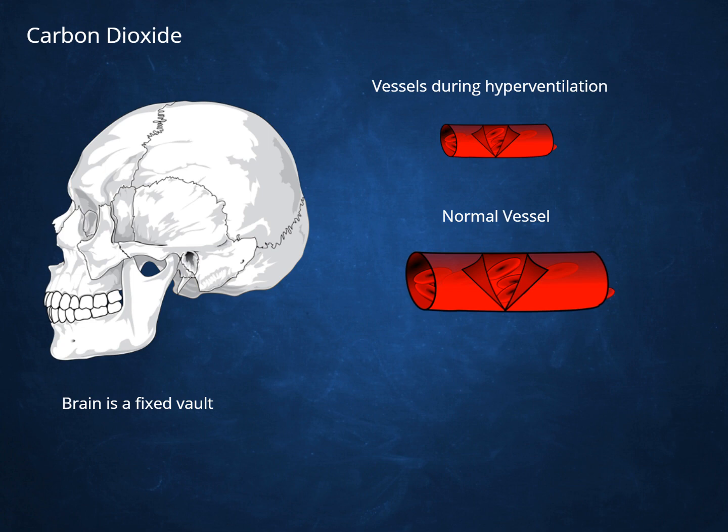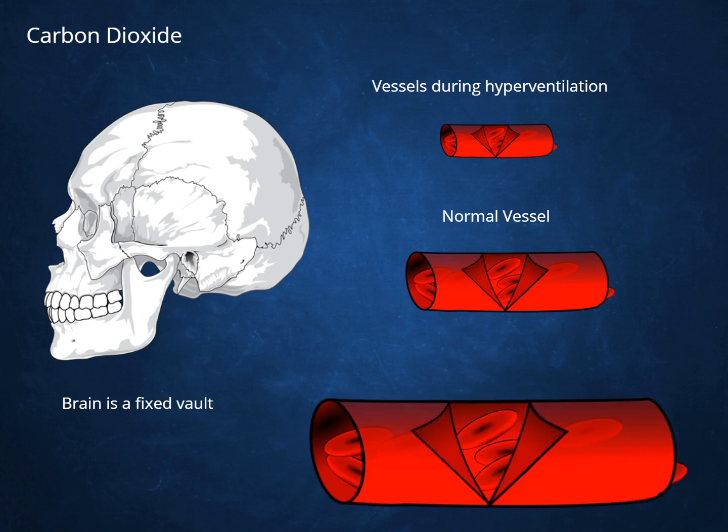However, if hypoventilation occurs, the vessels dilate, which leads to more problems if the patient already has increased intracranial pressure, namely swelling and edema. This just makes everything worse. This can be detrimental to a patient with a head injury, as it also can lead to lasting secondary injury, or injury that's not as a result of the initial insult, to the patient.